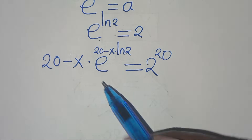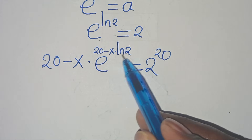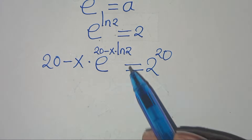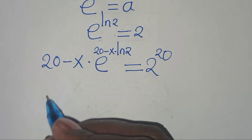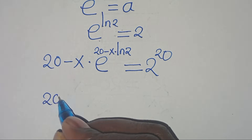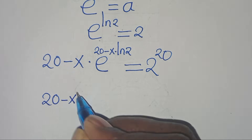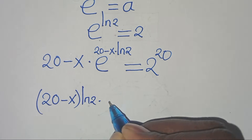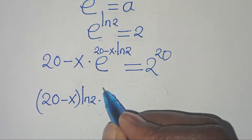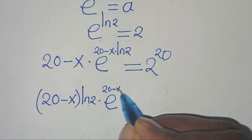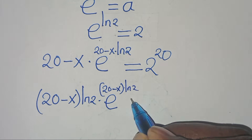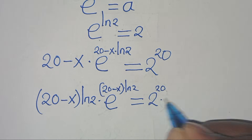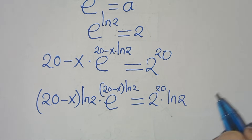We have (20 minus x) multiplied by ln(2) in the exponent. Let's multiply both sides by ln(2) so that we have (20 minus x) times ln(2), multiplied by e to the power of (20 minus x) times ln(2), equals 2 to the power of 20 times ln(2).